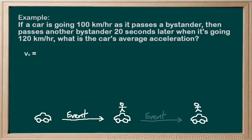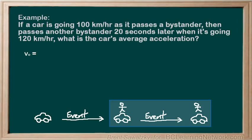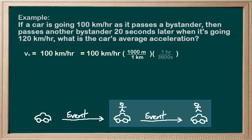Both are legitimate events, but since we don't know anything about when or where the car originally started, and we have lots of information about when it passed each bystander, let's consider our event to be from when it passed the first bystander to when it passed the second. Therefore, our V0 is 100 kilometers per hour — the velocity at the start of the event. We'll convert to standard units, listing V0 as 27.8 meters per second.